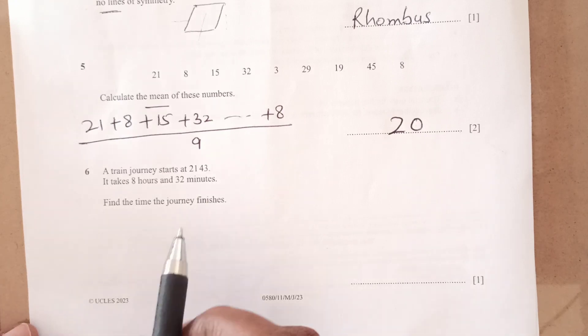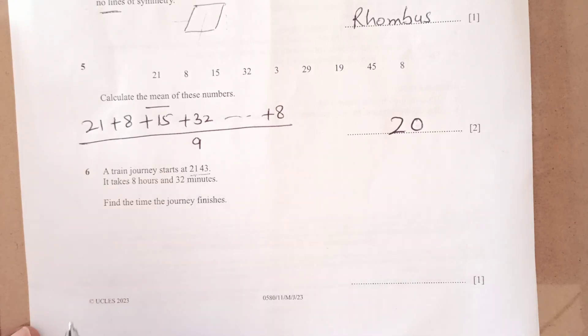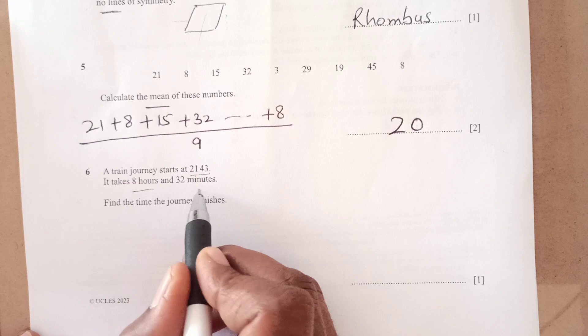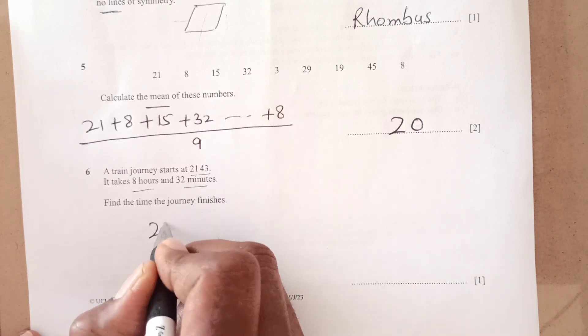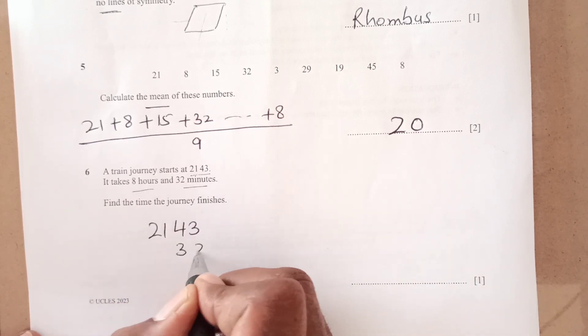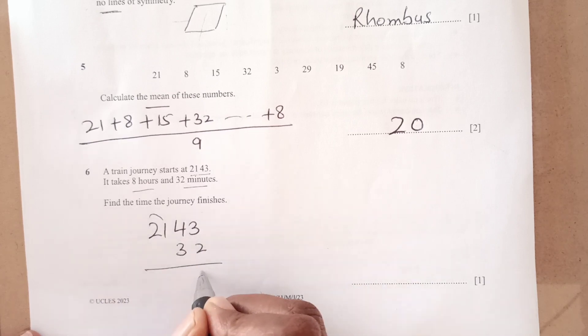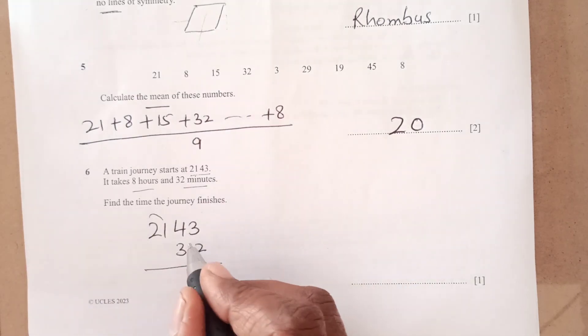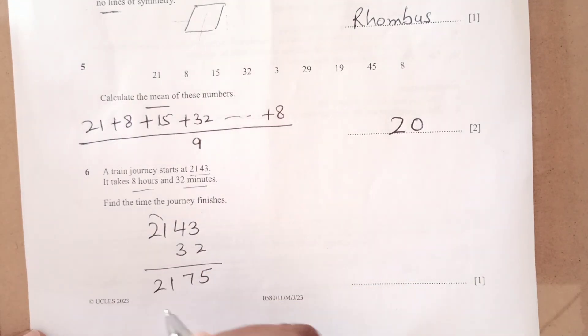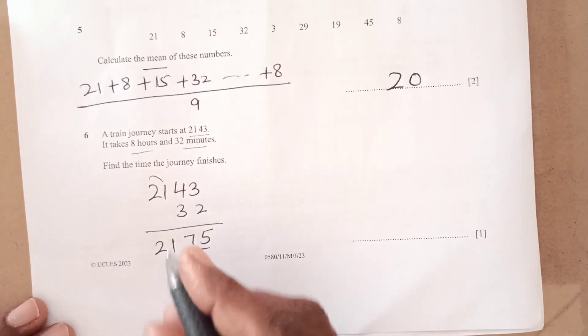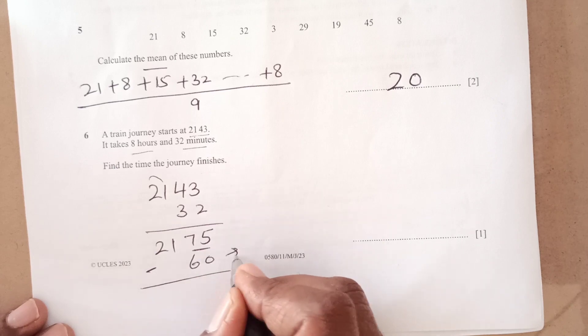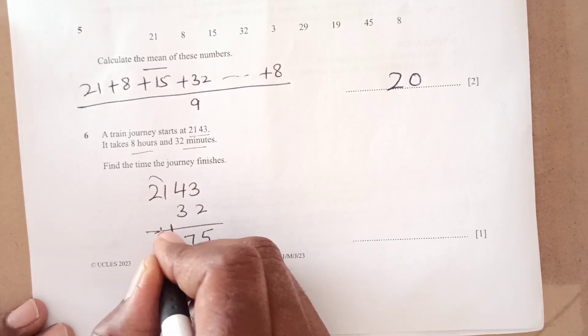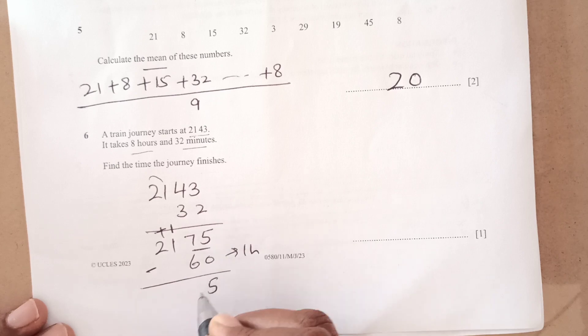Now, number 6, a train journey starts at 2143. It takes 8 hours and 32 minutes. Find out the time that journey finishes. So just going to add this. This is 2143. We are going to add 32 here. So this will become 3 plus 2, 5, 4 plus 3, 7, 21. But this exceeds now 60. So we can subtract 60 from here. That will become 1 hour. So that 1 hour is going to add over here. So this is 515. So this became 22.